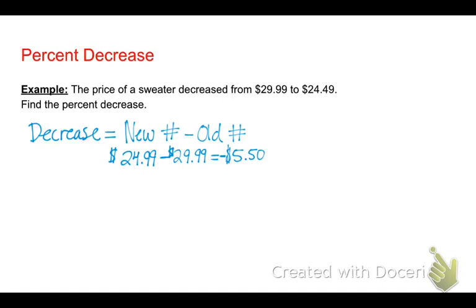So, then, to find our percent decrease, we want to take the decrease that we just found and divide it by our original number.